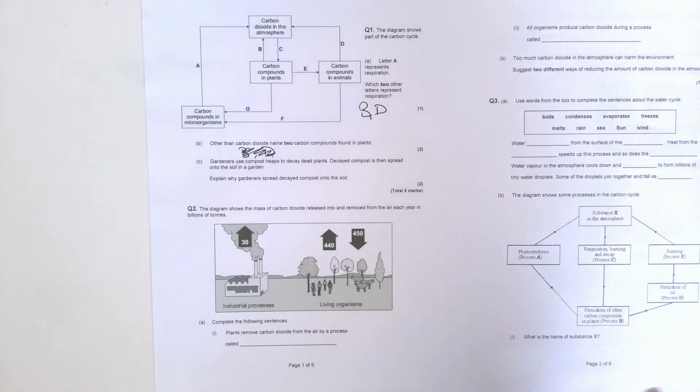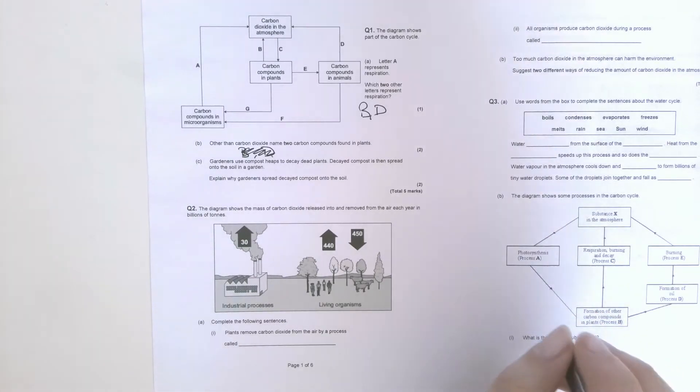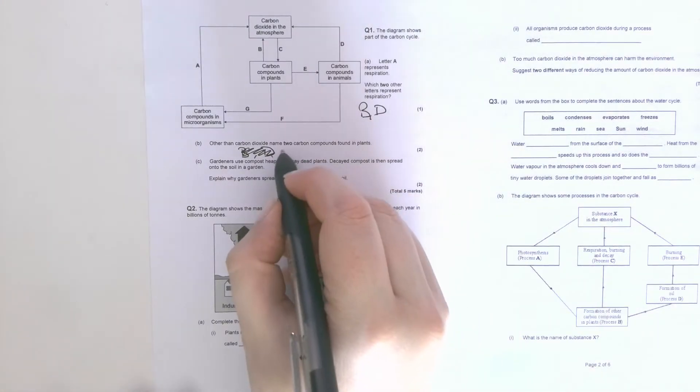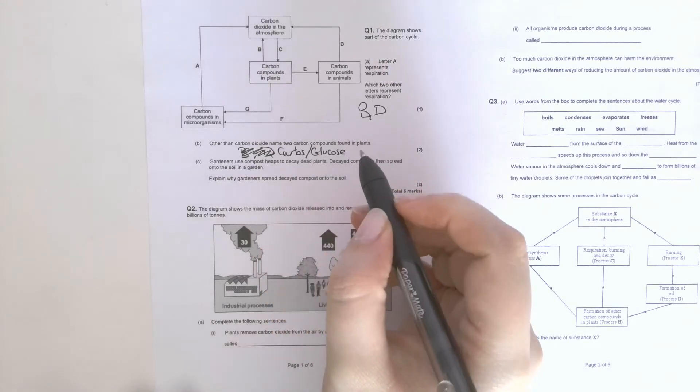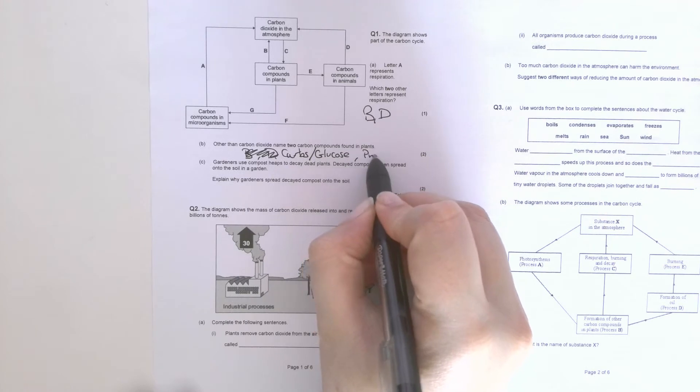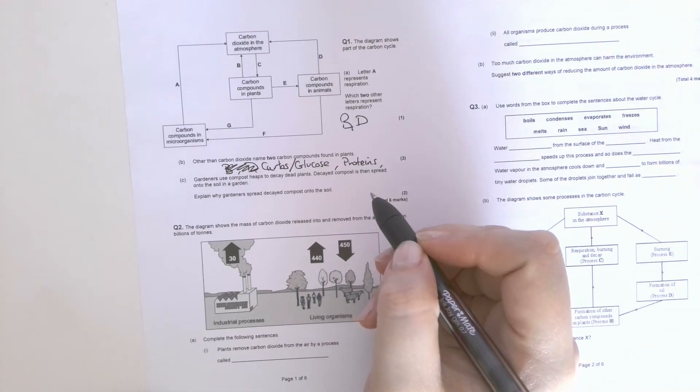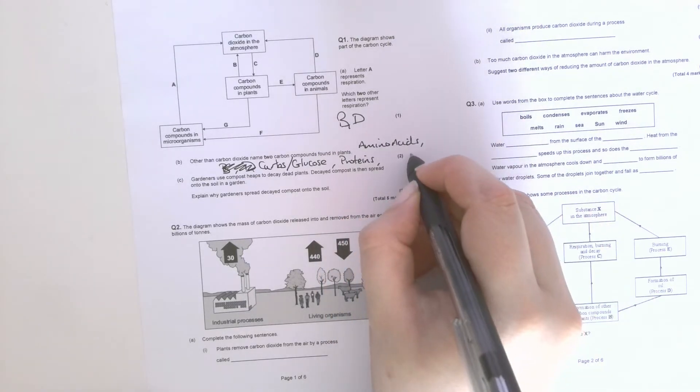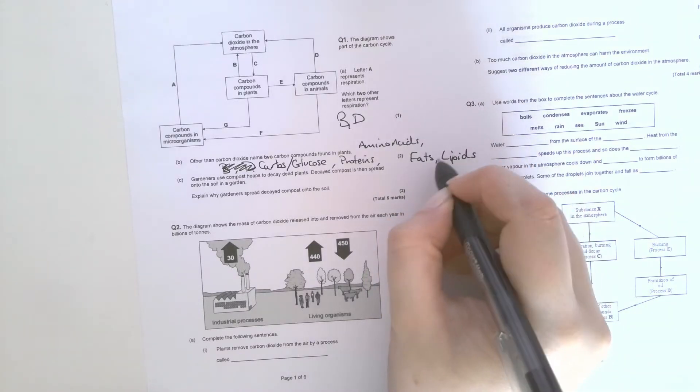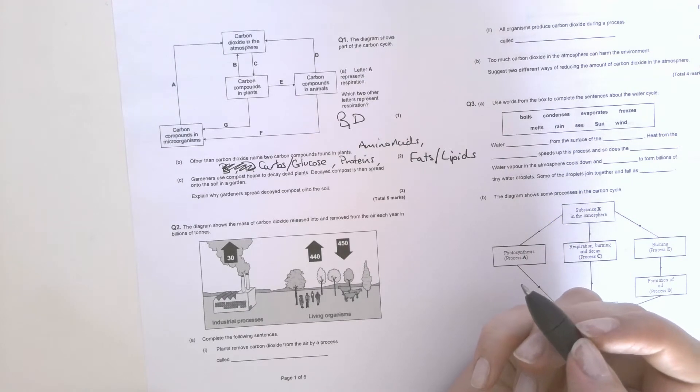Anyway, B: other than carbon dioxide, name two carbon compounds found in plants. Now this is quite a tricky question because we've never really explicitly gone through it, but most molecules that you'd find in a living organism, the things that build them up, are made from carbon. So you've got carbohydrates, or if you'd named one, quite a few of you named glucose because you know glucose is made from photosynthesis. That was good, but lots of other things like proteins have carbon in them, amino acids which make up proteins.